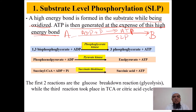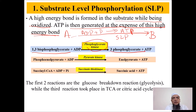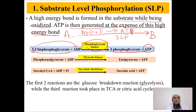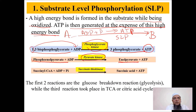Examples of substrate level phosphorylation include: first, 1,3-bisphosphoglycerate converted into 3-phosphoglycerate with the enzyme phosphoglycerate kinase — the phosphate at position 1 attaches to ADP to form ATP. Second, phosphoenolpyruvate converted into enolpyruvate by pyruvate kinase — the phosphate of phosphoenolpyruvate attaches to ADP to form ATP. Both of these are examples from the glycolysis pathway.